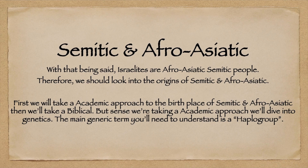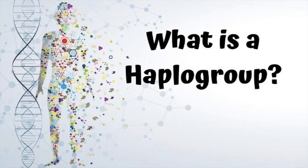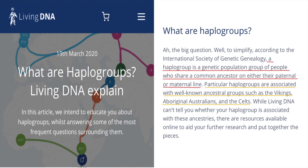With that being said, the Israelites are an Afro-Asiatic Semitic people. Therefore, we should look into the origins of Semitic and Afro-Asiatic. We'll take an academic approach to the birth of Semitic and Afro-Asiatics first, then a biblical approach in the next video, part two. Since we're taking an academic approach, we'll dive into genetics as well. The main genetic term we need to understand is a haplogroup, which I've done a video on.